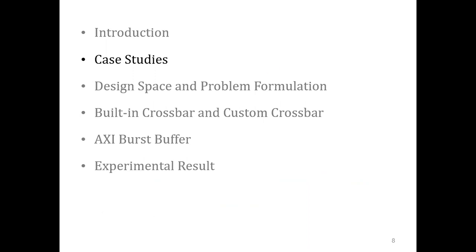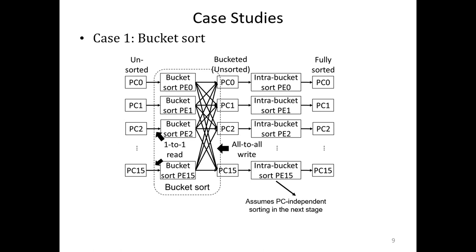I will now explain the two applications we use for case study. The first application is bucket sort. We read unsorted data from an input PC and classify them into different output buckets based on the values of the keys. Each output bucket is stored in a single HBM PC, and we assume that there is a second-stage sorting performed independently on each bucket. Several bucket PEs may send their keys to the same PC, so there is an all-to-all communication on the write interconnect of the sorter.